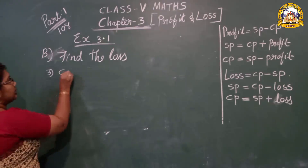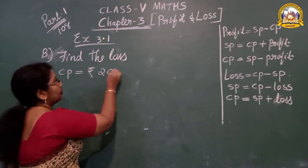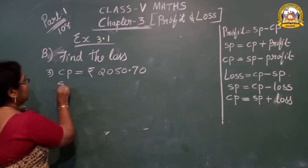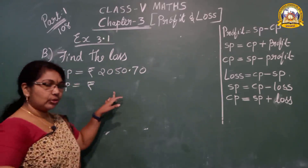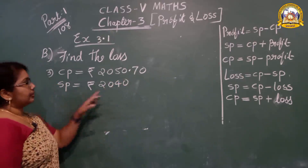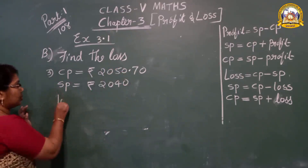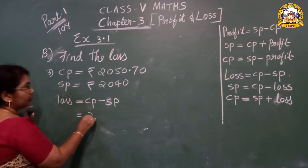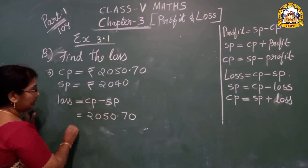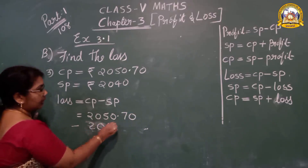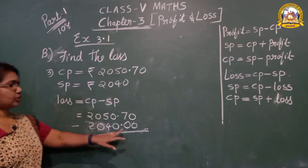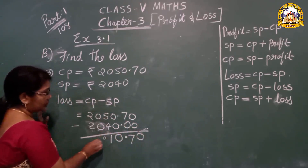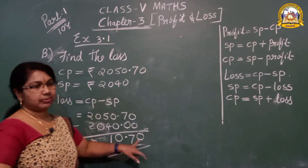Third question: CP is equal to rupees 2050.70, and SP is equal to rupees 2040. Since CP is greater, there is a loss. Loss formula: CP minus SP. So 2050.70 minus 2040.00 — if there is a point after with no digit, you should put double zero. The answer: 10 rupees 70 paisa is the loss.